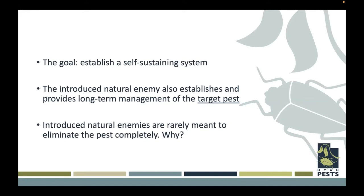The goal of biological control is essentially to create a self-sustaining system where the populations of pests go up, then the populations of the natural enemies can go up. Once there's not enough food left for those natural enemies, their populations will drop down, and then the pest population can go back up — it kind of fluctuates back and forth. Natural enemies that are introduced are rarely meant to completely eliminate a pest. If all pests disappear, there's nothing there for the beneficial insect to predate on, to parasitize, and they're going to leave the area or die off.